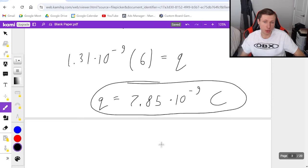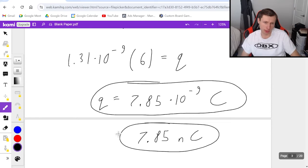Or if they want the answer in nanocoulombs, you'd multiply this answer by 10 to the ninth, which would then make it 7.85 nanocoulombs, which is also a correct answer. Depends what units they want. And so that's it for the first one. Not too bad.